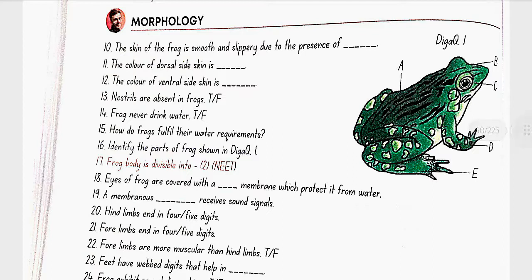Morphology. The skin of the frog is smooth and slippery due to the presence of mucus. The color of dorsal side skin is olive green. The color of ventral side skin is uniformly pale yellow. Nostrils are absent in frogs. No, this is false.